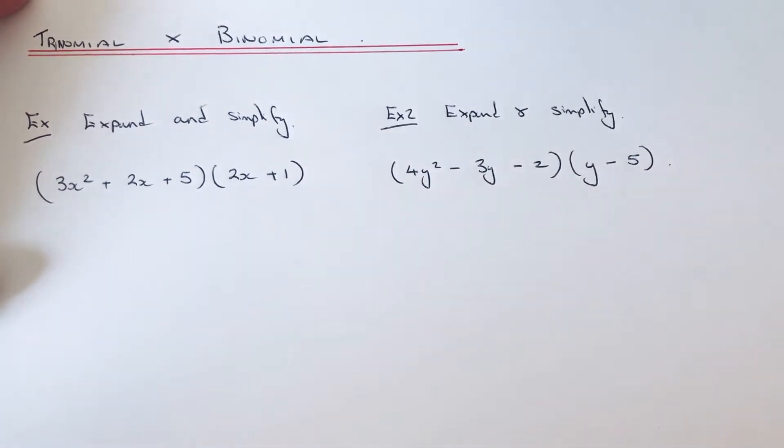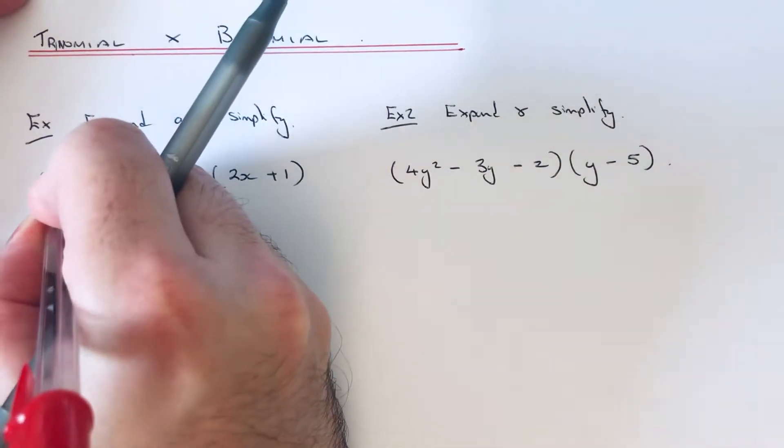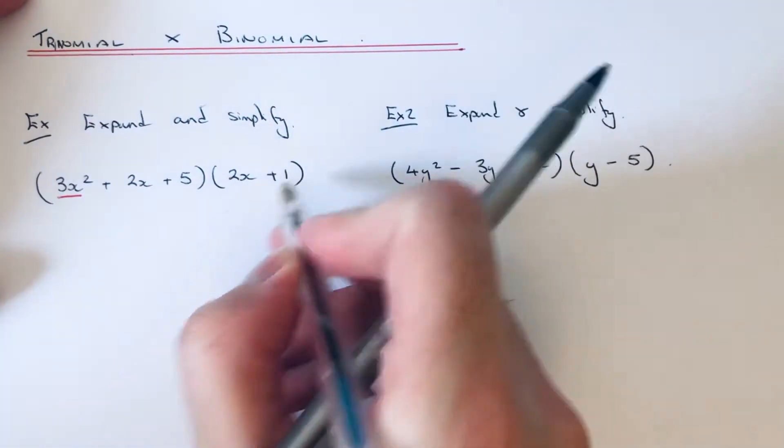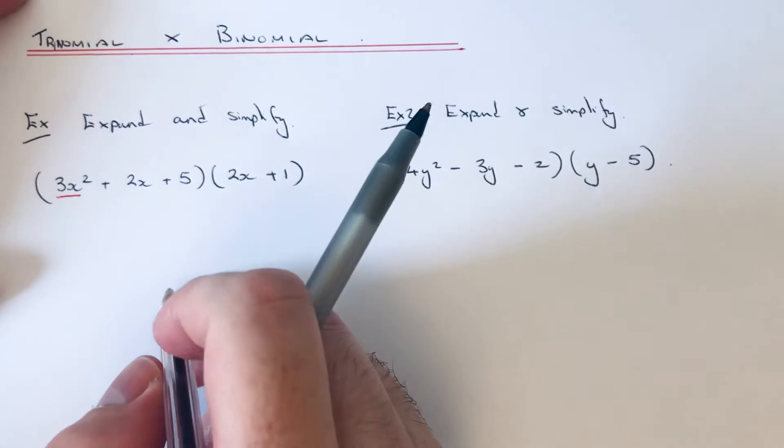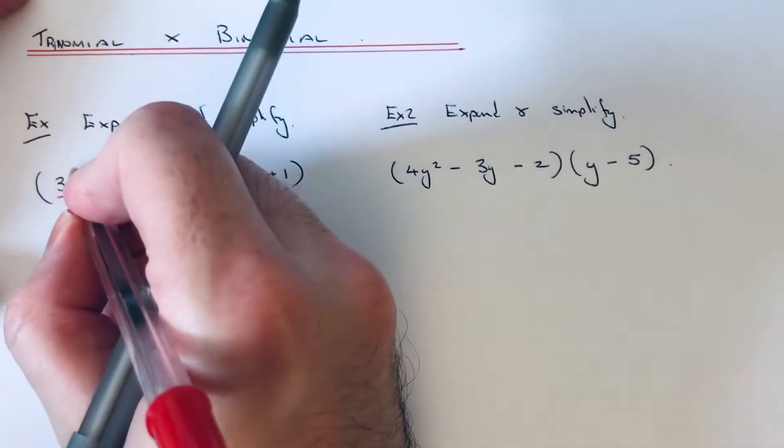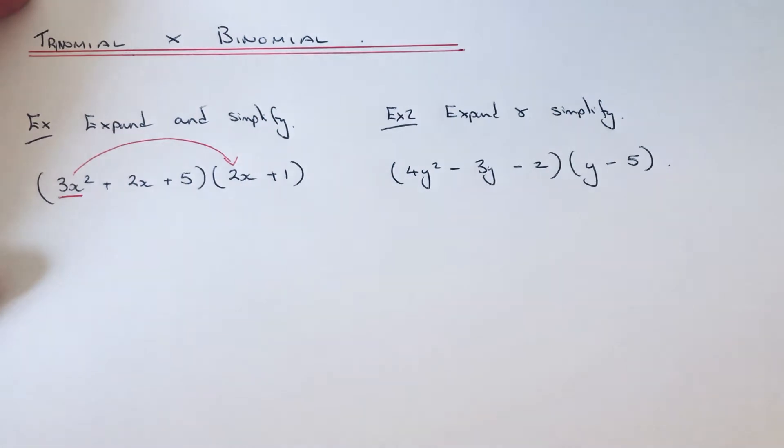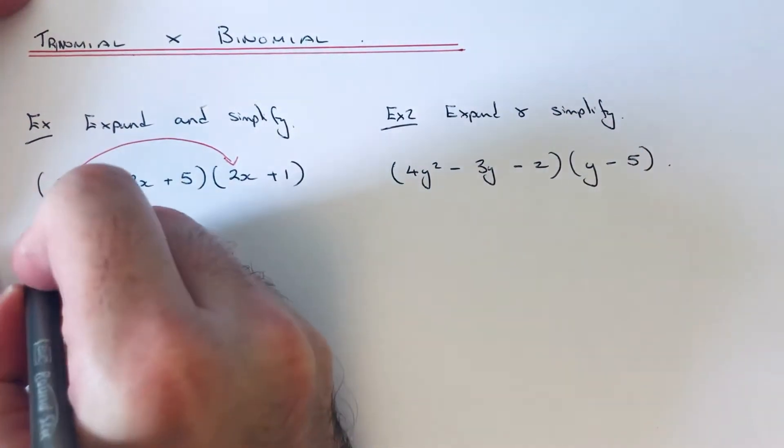The best way to do this is to start off with the first term and multiply it by the two terms in the second brackets. So if we do 3x² times 2x first of all, that would be 6x³.